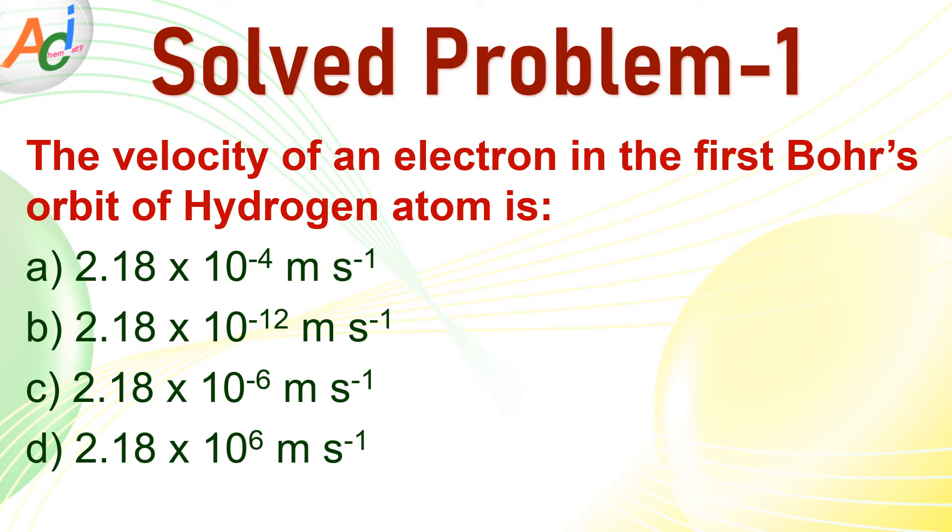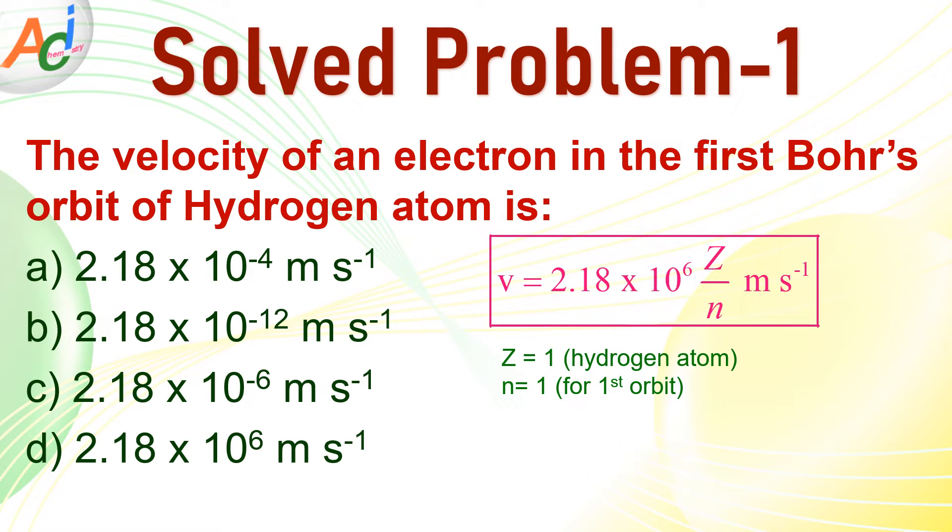Now, let us go through few problems and sharpen our skills by solving them. This is first problem. The velocity of an electron in the first Bohr's orbit of hydrogen atom is, here four options are given. You know that velocity is given by 2.18 × 10^6 Z/n m per second. Here Z is equal to 1 for hydrogen atom and n is equal to 1 because it is the first orbit. Just plug in the values you will get the velocity equals to 2.18 × 10^6 meter per second so the correct option is d.